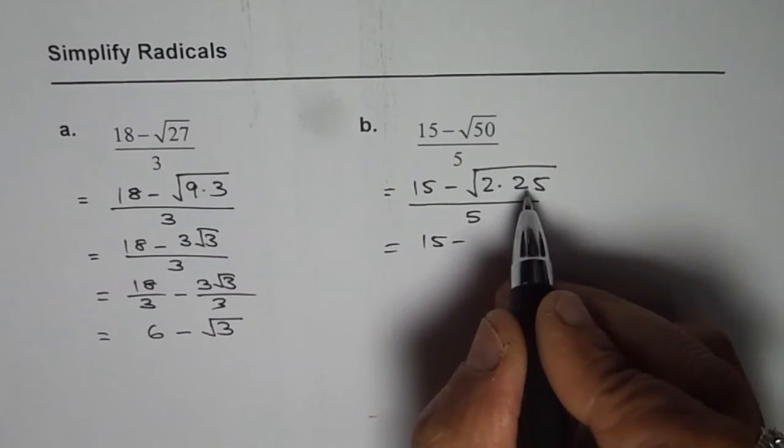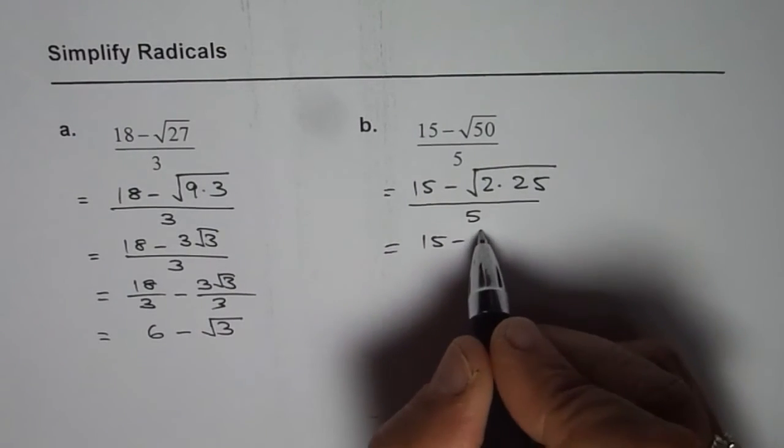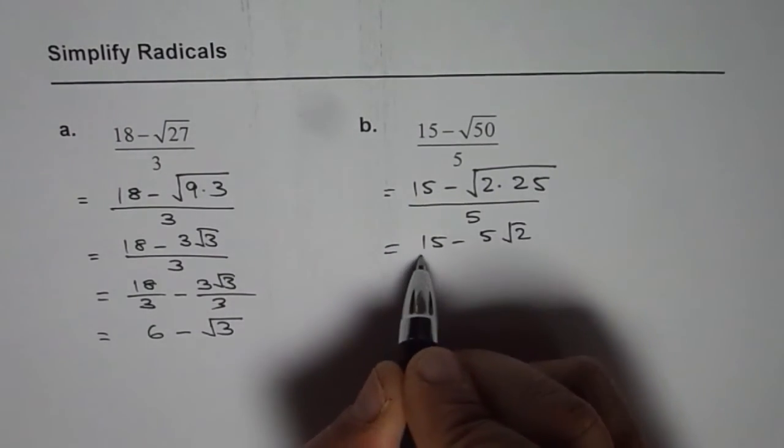So 15 minus, so it's a perfect square of 5. So let's take out 5 and write it like this.